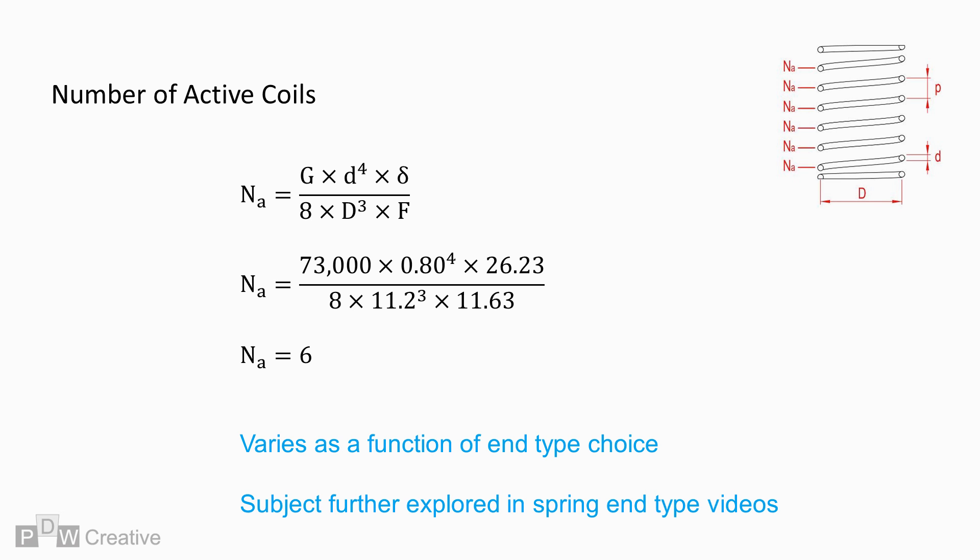Active coils are another variable that changes depending on the spring end-type and this will be explored in the end-type videos that follow in this series.